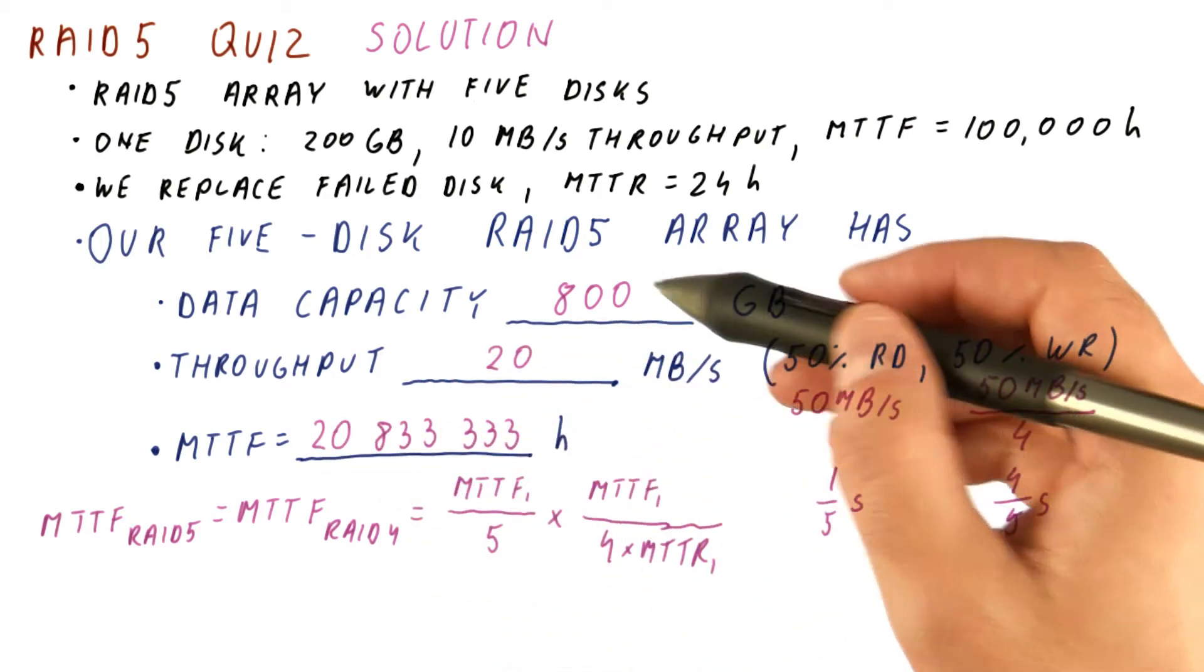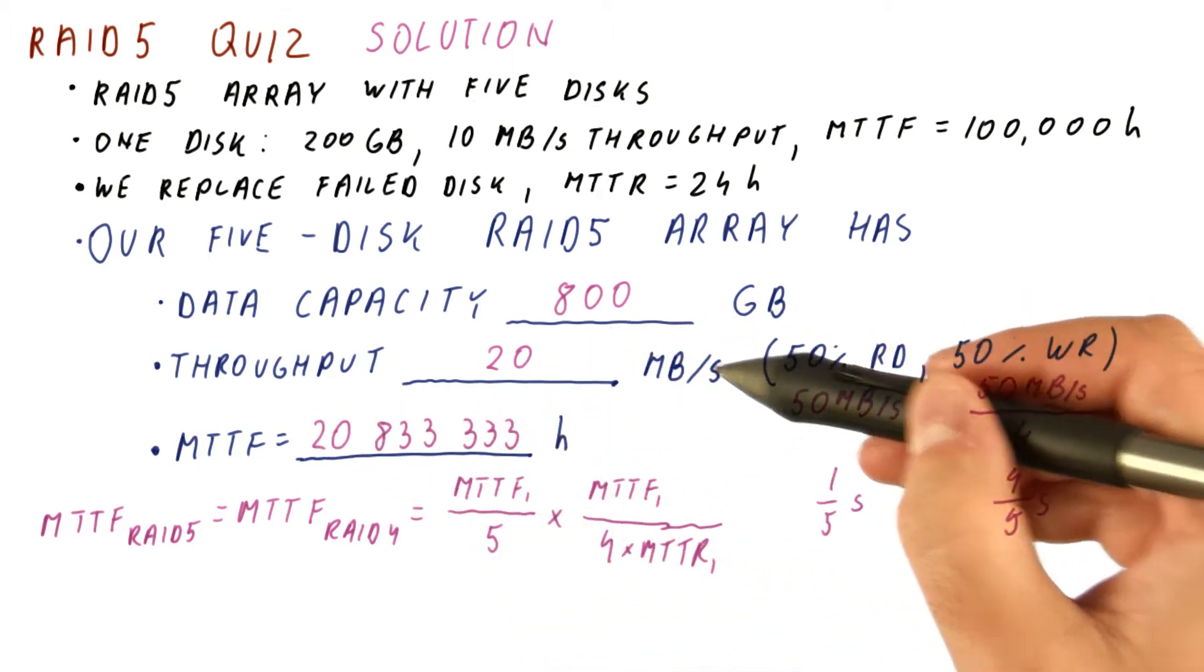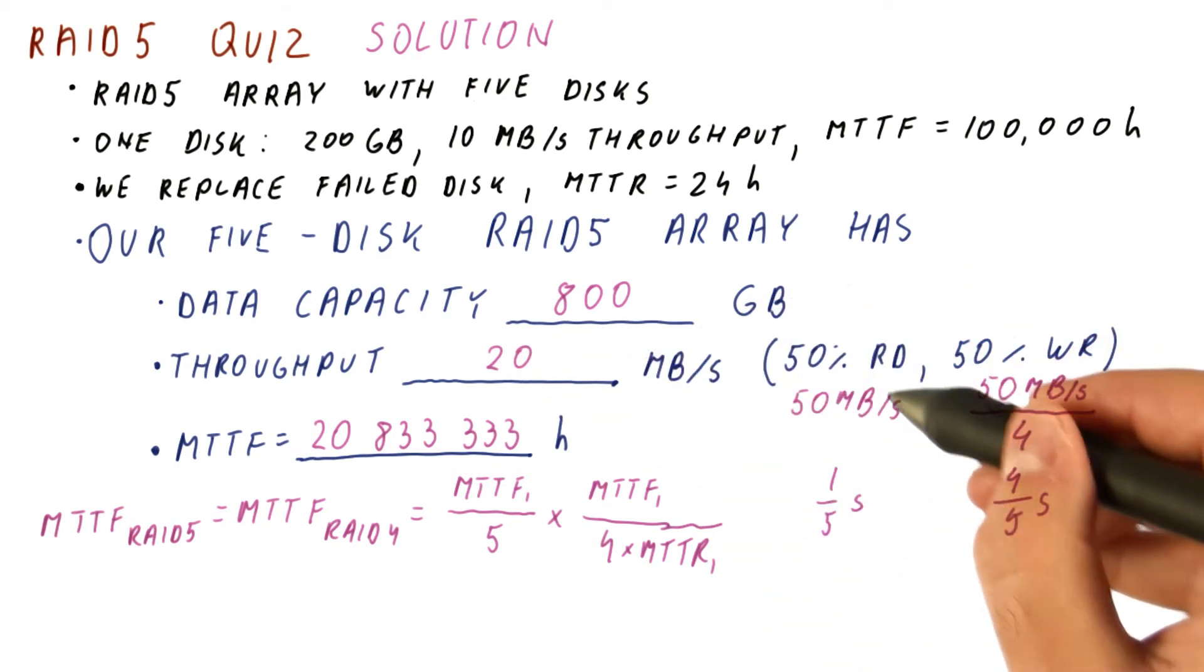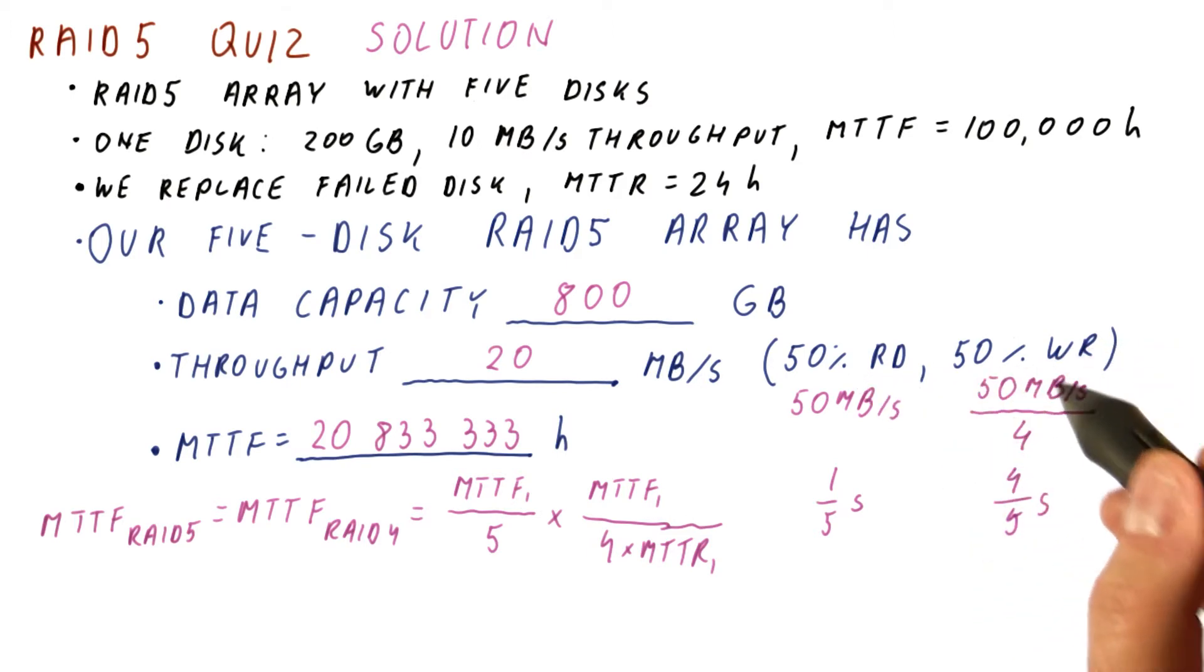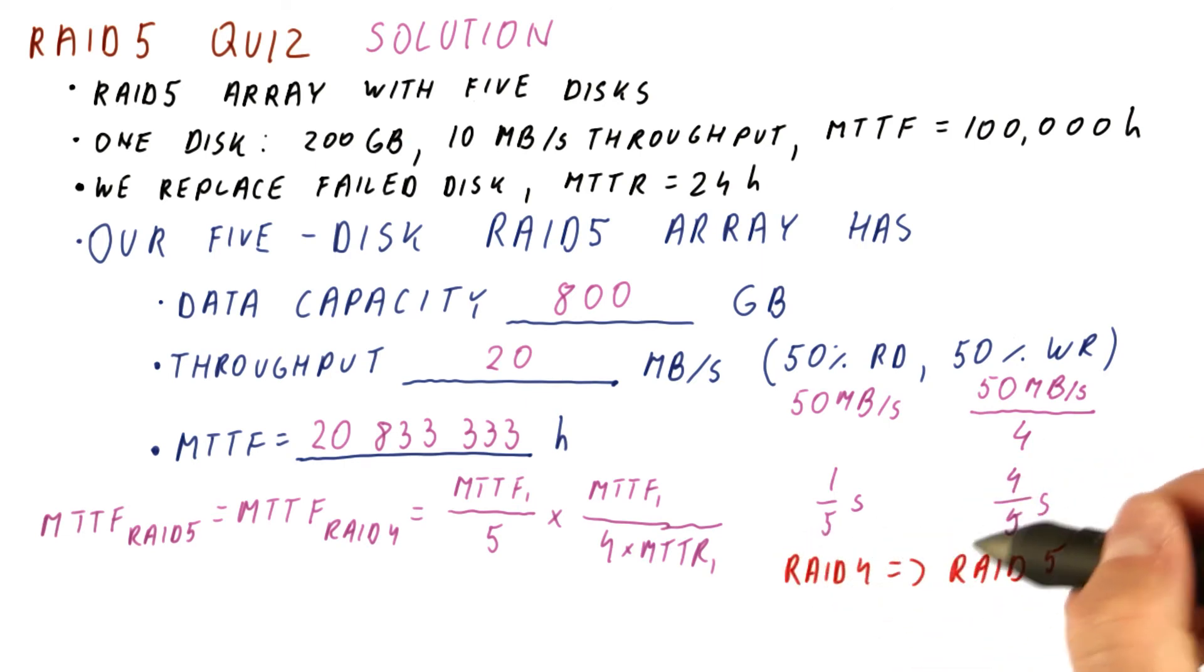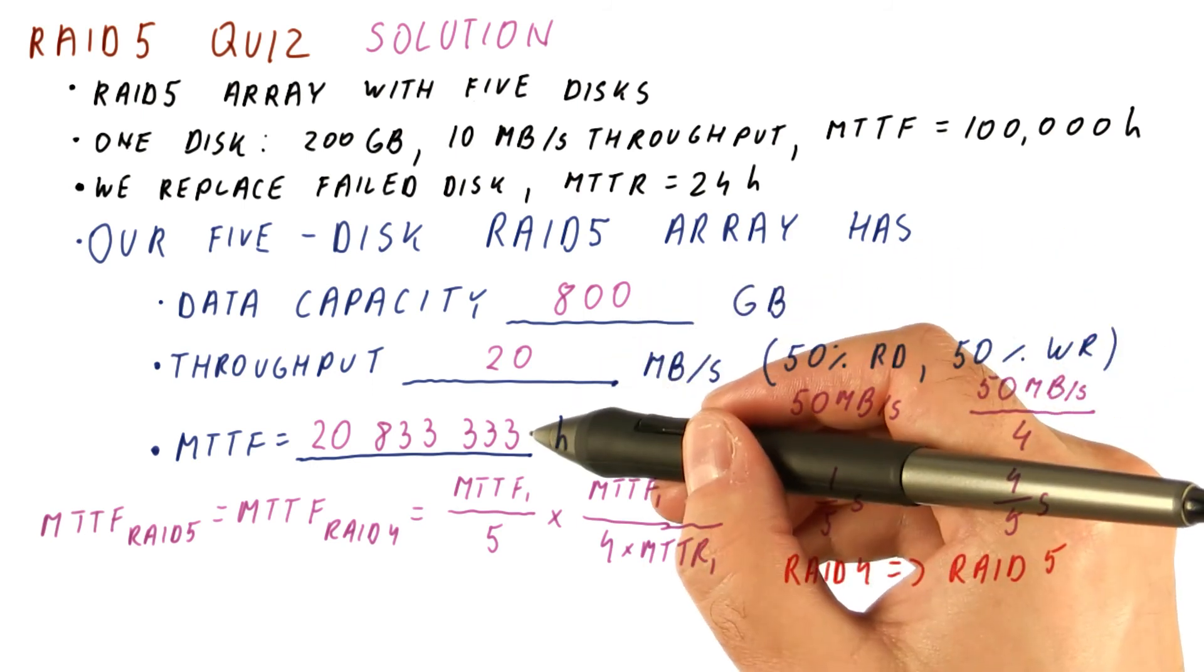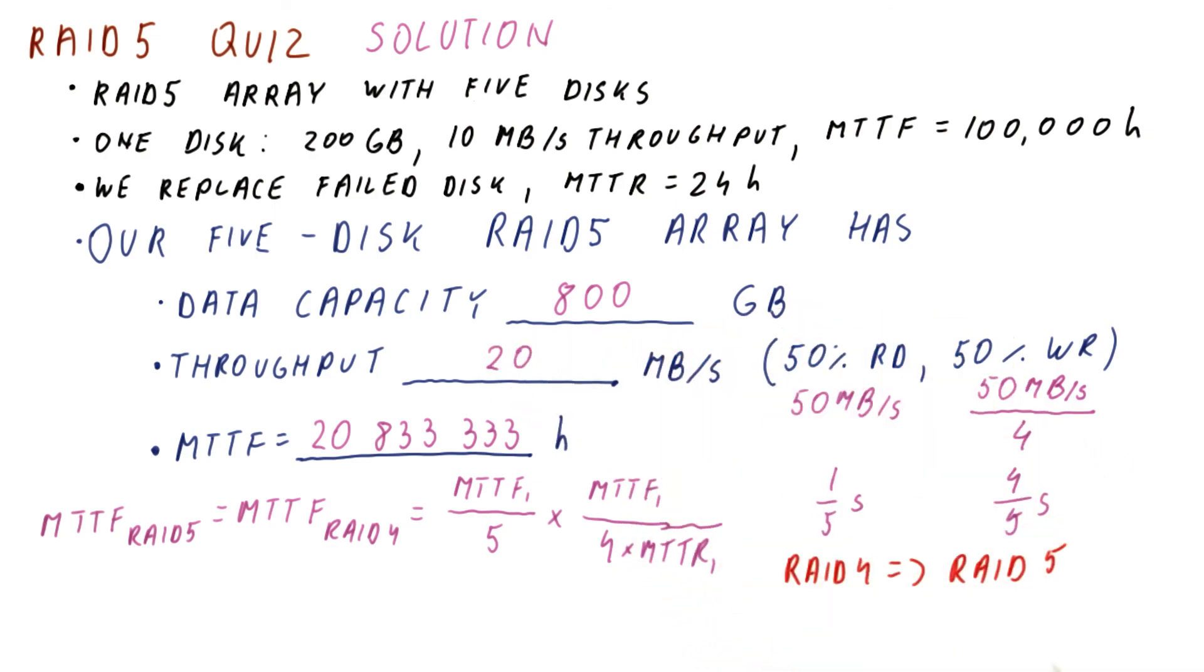So RAID 5 has the same data capacity and the MTTF as RAID 4, but has significantly better throughput. For reads, it has slightly better throughput because we can use all five disks instead of just four. For writes, it has a lot better throughput. So that means we never really want to use a RAID 4 array, because we can move to a RAID 5 array without sacrificing data capacity, without sacrificing the MTTF, but with improving the throughput.